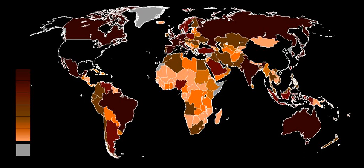William Petty came up with a basic concept of GDP to attack landlords against unfair taxations during warfare between the Dutch and the English between 1652 and 1674. Charles Davenant developed the method further in 1695. The modern concept of GDP was first developed by Simon Kuznets for a U.S. Congress report in 1934. In this report, Kuznets warned against its use as a measure of welfare.